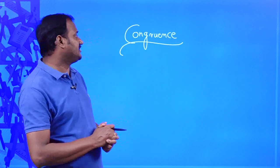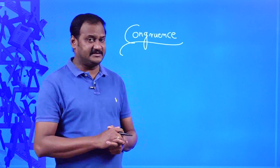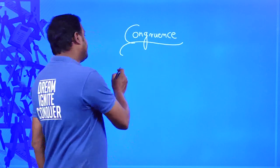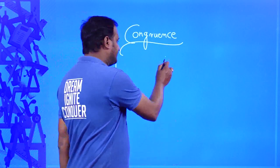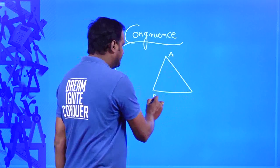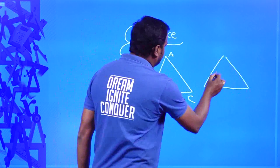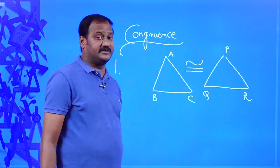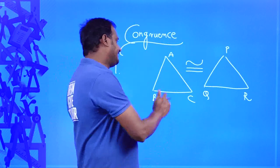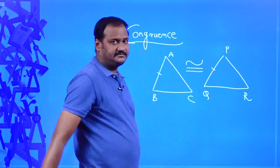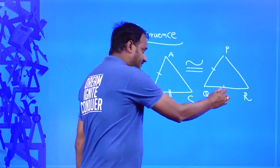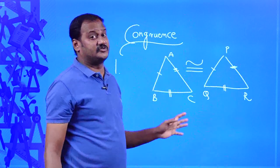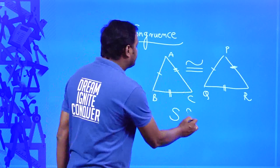Let us understand what these congruence properties of triangles are — when two triangles are said to be congruent. The very first one: if I have two triangles, triangle ABC and triangle PQR, and if length AB equals length PQ, length BC equals length QR, and length AC equals length PR, then these two triangles are said to be congruent by SSS congruence.